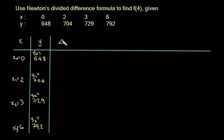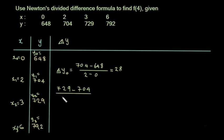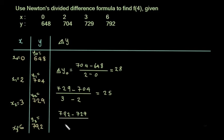We calculate the first divided differences: Δy₀ = (704 minus 648) divided by (2 minus 0) = 28. Next, Δy₁ = (729 minus 704) divided by (3 minus 2) = 25. And Δy₂ = (792 minus 729) divided by (6 minus 3) = 21.